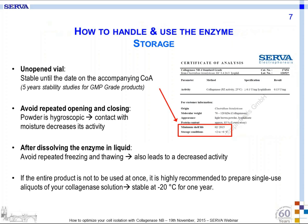After you have chosen the right collagenase, it is time to talk about how to handle and use the enzymes. All points mentioned in this section can also be found on the product insert which comes with every vial. The collagenase is stable at least until the date on the COA when unopened and stored correctly. If the vial is opened and closed several times, the lyophilized enzyme comes in contact with air moisture, which might decrease its activity since the enzyme powder is hygroscopic. Therefore, the vial should not be opened and closed repeatedly. Once diluted, repeated freezing and thawing should also be avoided, as this also leads to decreased activity. It is highly recommended to prepare single-use aliquots of your collagenase solution and store those instead of the whole solution if you cannot use it at once.